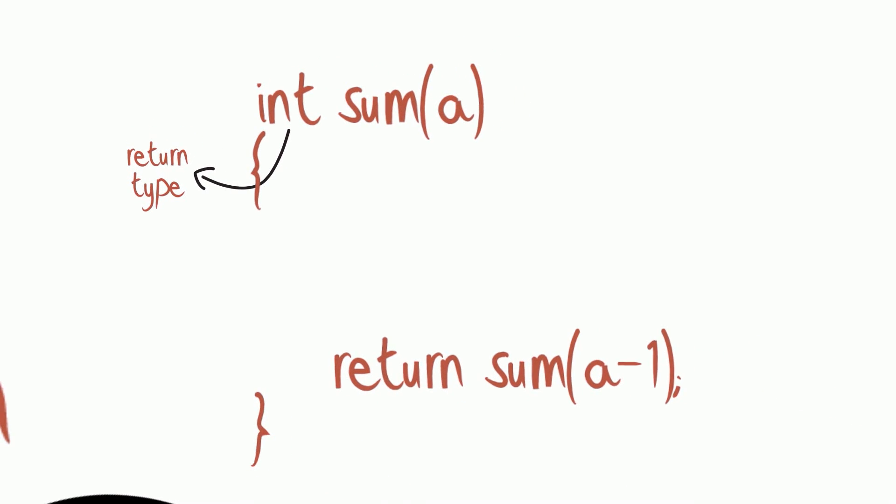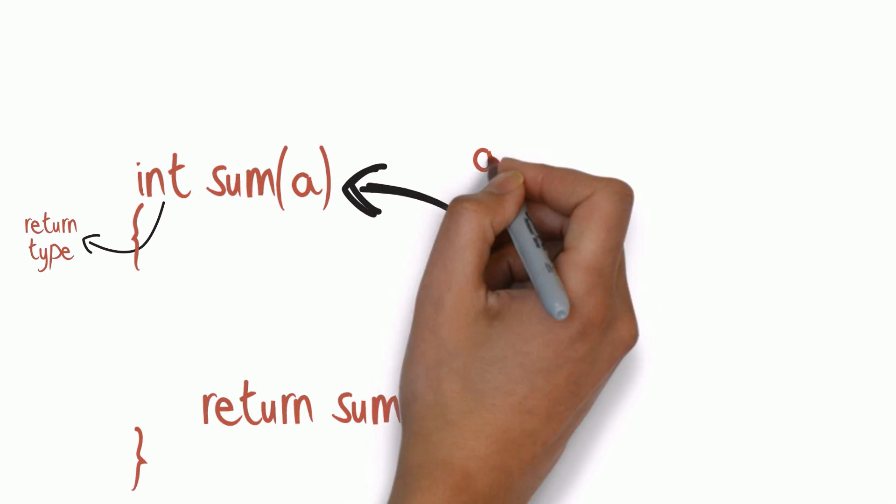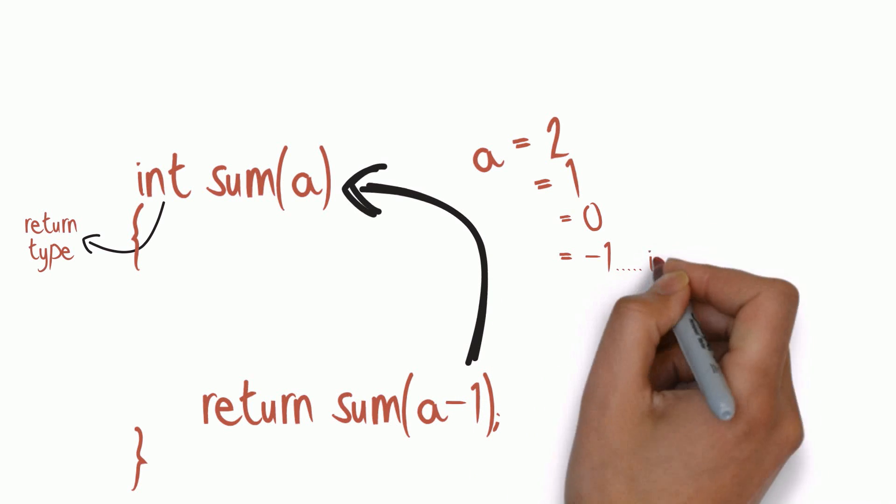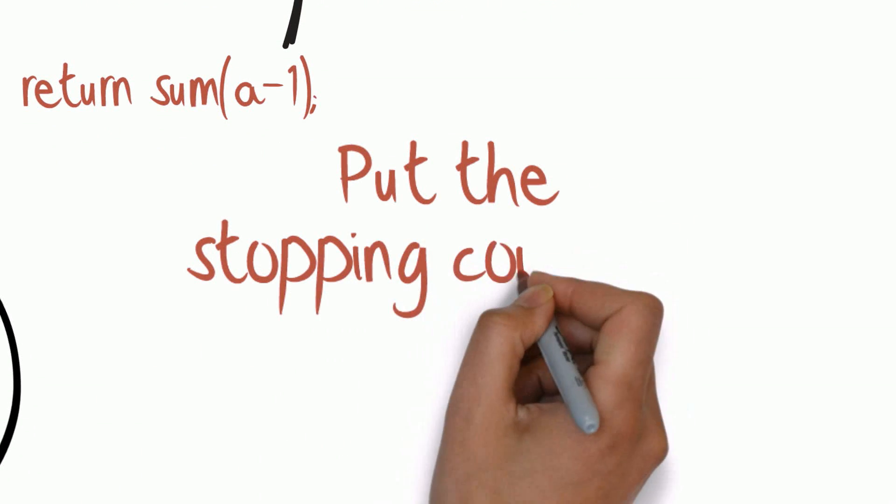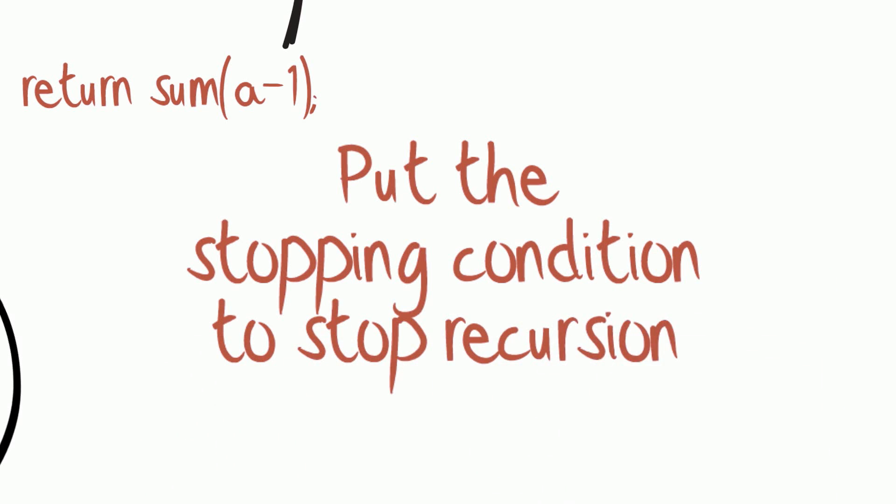This method keeps calling itself over and over. The process of recursion continues infinitely. And that is why, to determine where the recursion needs to break, we put a stopping condition where the recursion stops.